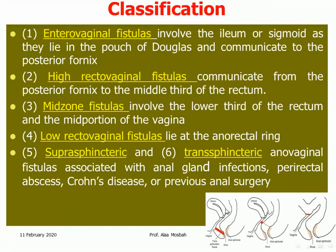High rectovaginal fistula communicates from the posterior fornix to the middle of the rectum. Mid-zone fistula involves the lower third of the rectum and the mid portion of the vagina. Low rectovaginal fistula lies at the anorectal ring. Suprasphincteric and transsphincteric fistulas are also described. Anorectal-vaginal fistula may be associated with anal gland infection, perirectal abscess, Crohn's disease, or previous anal surgery.